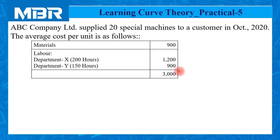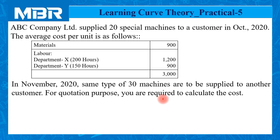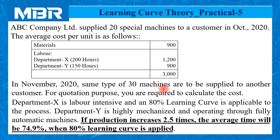Further information is also given by the examiner. In November 2020, the same type of 30 machines are to be supplied. It is clearly mentioned that 30 more units are to be supplied to another customer. However, for quotation purposes, you are required to calculate the cost.